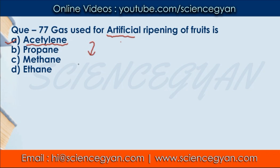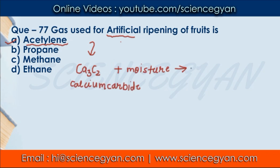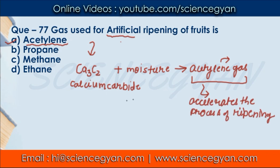Here is the explanation: Calcium carbide is used for artificially ripening fruits. The formula of calcium carbide is CaC₂. When calcium carbide comes in contact with moisture, acetylene gas is produced. This acetylene gas accelerates the ripening process — that is, a raw fruit starts to ripen faster.